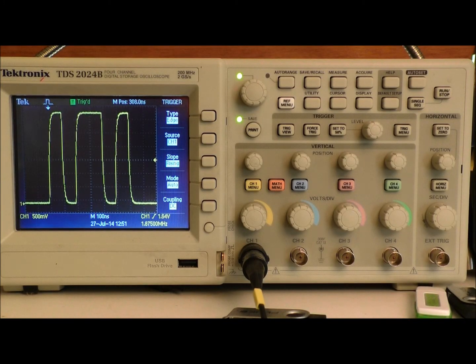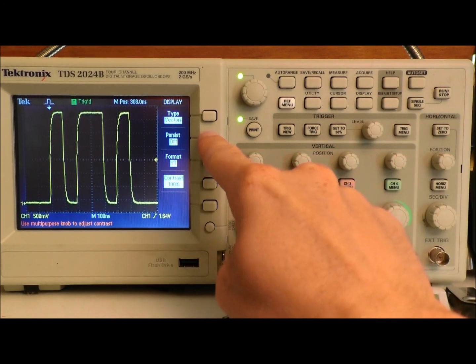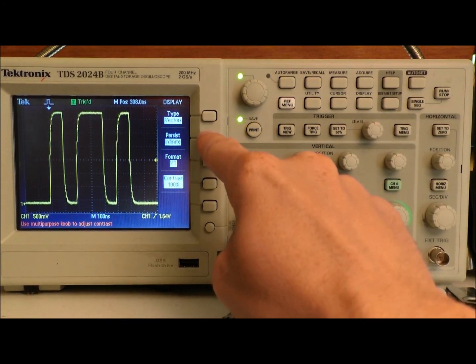I was glad that I'm using a TDS 2024B because it has a feature called persist, which overlays one trace over the other. It's a little bit different than how the MDO does it, but it allows you to see a lot of traces all at once. What you do is you go into display and you take persist and you turn it on to infinite.